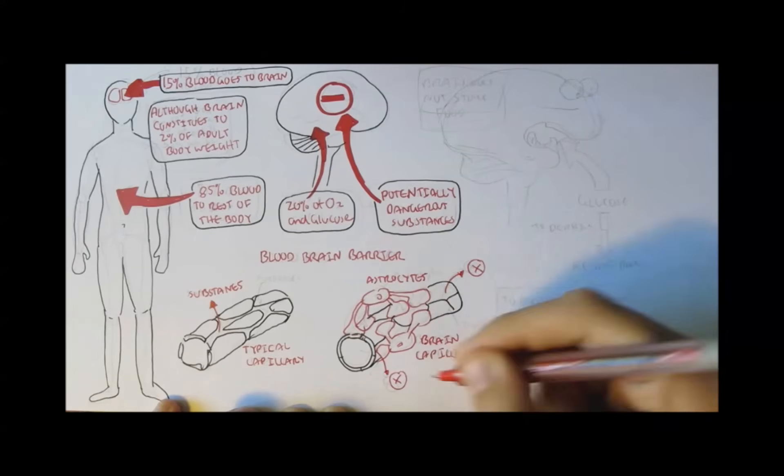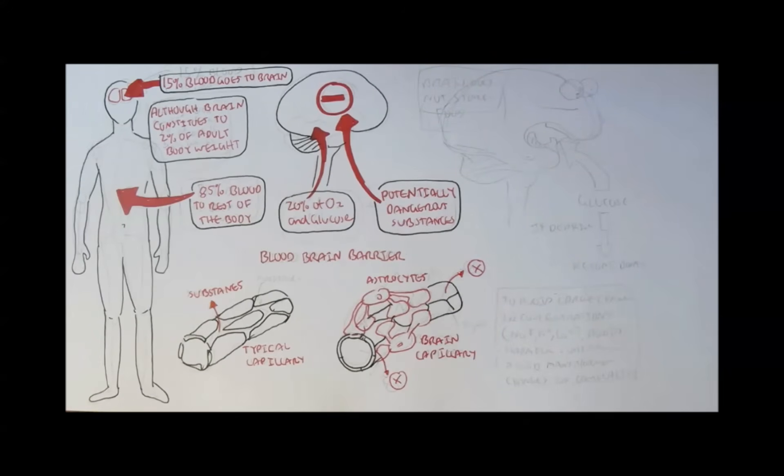The blood-brain barrier is there to avoid large changes in concentration of sodium, potassium, and calcium, as well as changes in osmolality in the brain, and to avoid harmful substances as well as hormones to come inside.